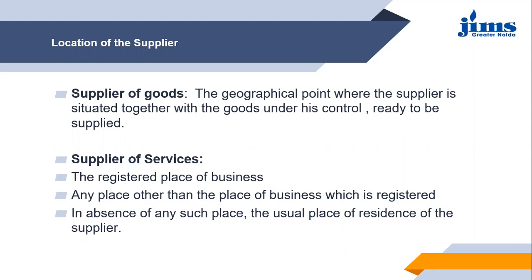In summary, for goods, the location of the supplier is the registered place of business or the geographical point where goods are under the supplier's control. For services, the hierarchy is: first, the registered place of business; second, any other address registered by the registered person; and third, if the first two are absent, the usual place of residence of the supplier.